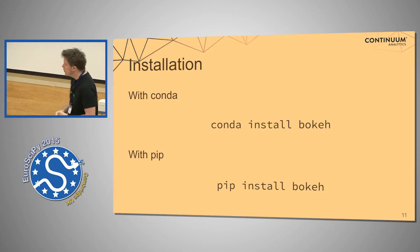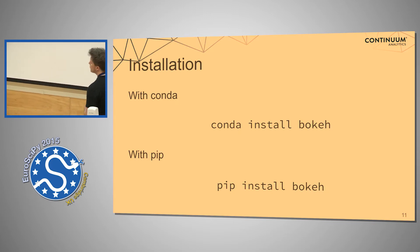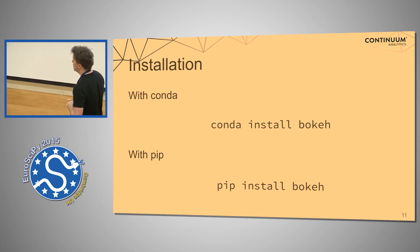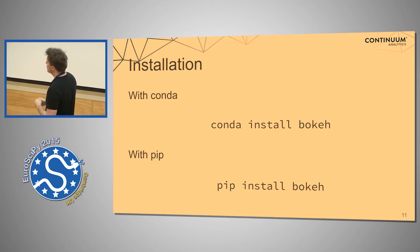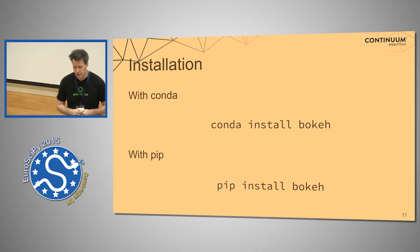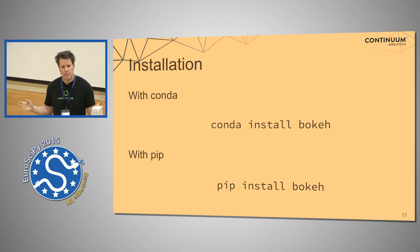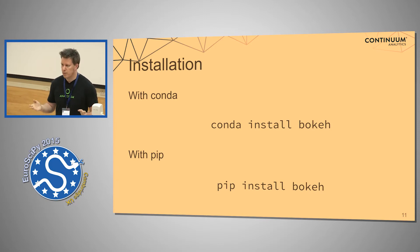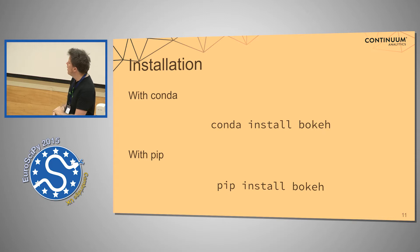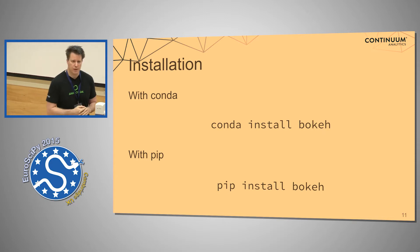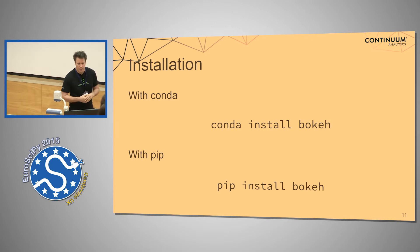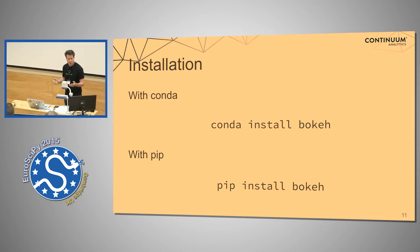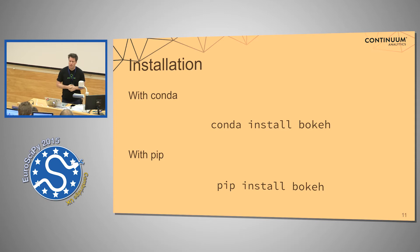Where can you get it? The easiest way is either conda or pip — they should just work out of the box. Conda install Bokeh if you're using Anaconda, or pip install Bokeh should work just fine. Let's go ahead and take a minute and let everyone try to install if you haven't already done so. Just see if everyone can get up and running.